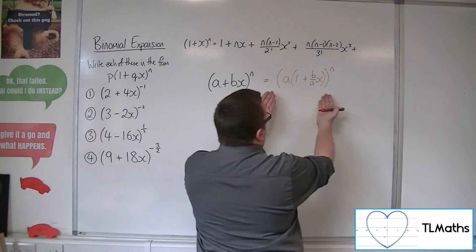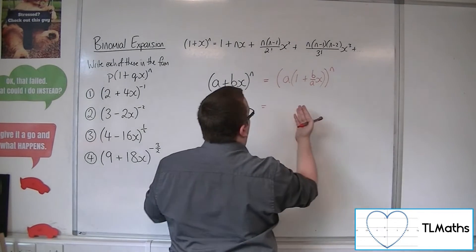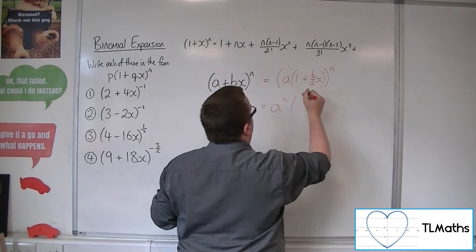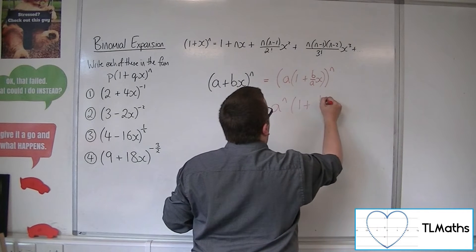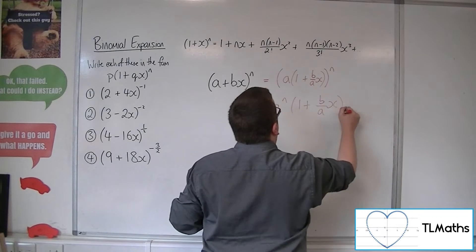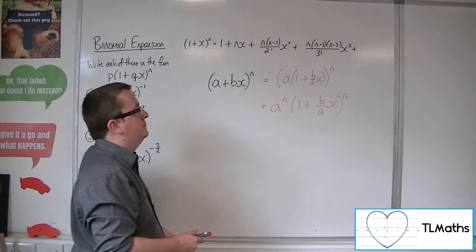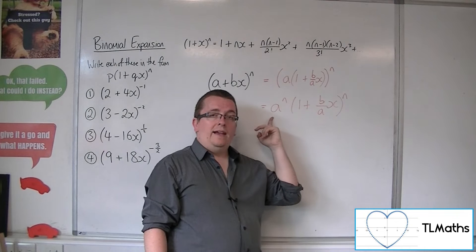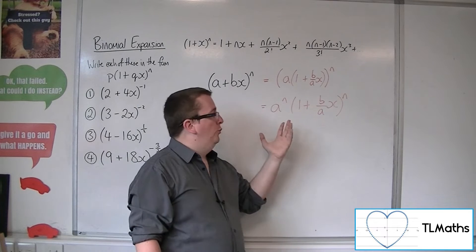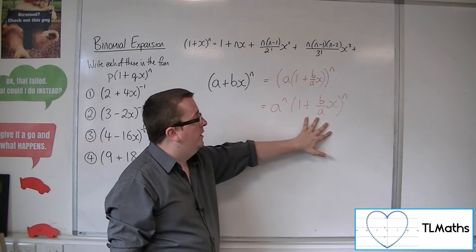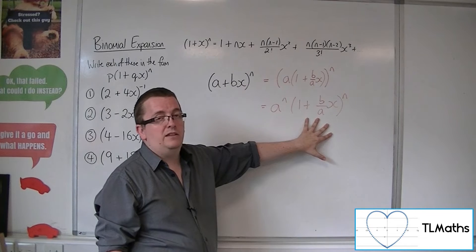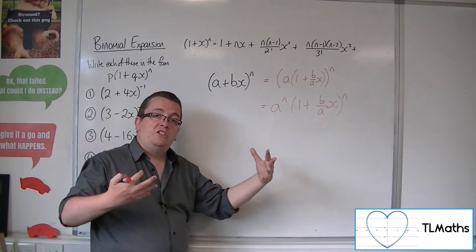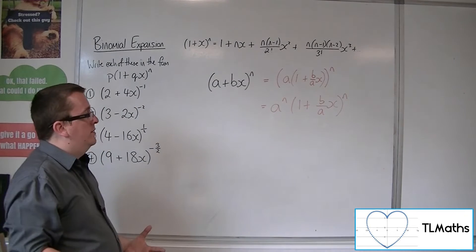So now that I've got this, I can say, well, now I've got a to the n times by 1 plus b over a x to the n. And now, whatever that is, a to the n, I can just multiply my expansion of 1 plus b over a x to the n by whatever that number is. And then I've got the binomial expansion of what I need.